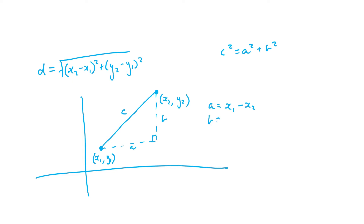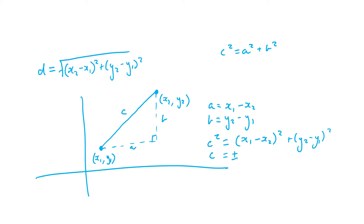And we can find the length of b, which is our vertical component: y2 minus y1. Subbing this into Pythagoras' theorem, we get c squared equals (x1 minus x2) squared plus (y2 minus y1) squared. This is looking very familiar — almost exactly like our distance formula. All we need to do is take the square root of both sides, giving us c equals the square root of (x1 minus x2) squared plus (y2 minus y1) squared.